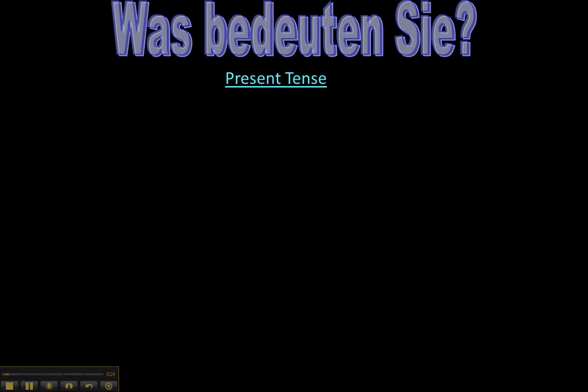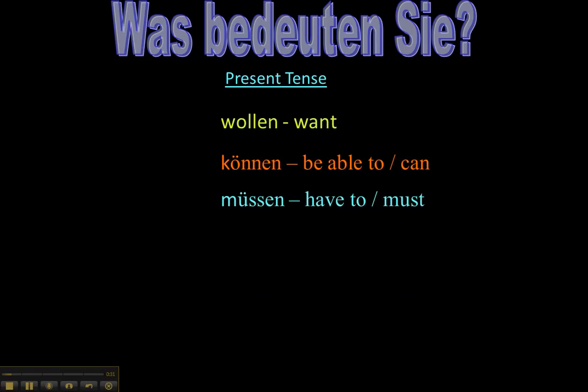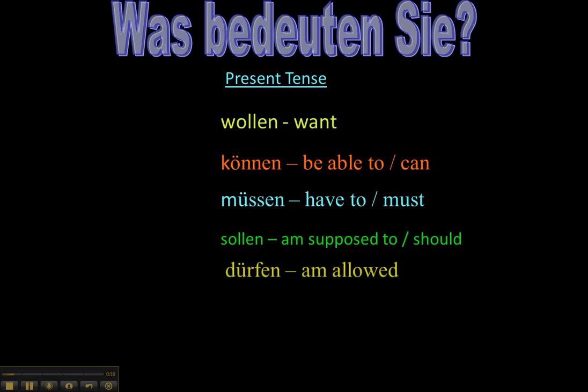Was bedeuten Sie? What do they mean? Let's talk about just the present tense. Wollen is to want, können is to be able to or can, müssen is have to or must, sollen is should or am supposed to, dürfen is am allowed, and mögen is to like.